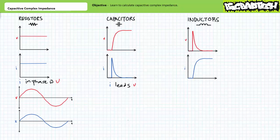Recall from our discussion on the time-variant DC response of inductors that inductors with no established magnetic field experience a voltage spike followed by rising current. This behavior can be summarized as current lagging voltage for inductive elements, and that the current rise occurs only after the voltage spike. As with capacitors, the time constant established by the inductive circuit determines how slow or fast this exchange of energy occurs.